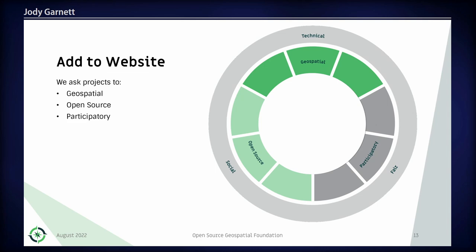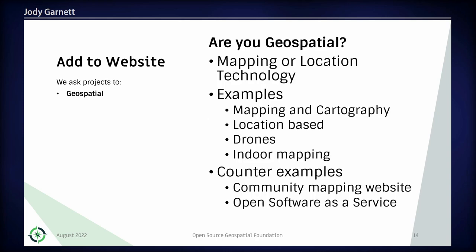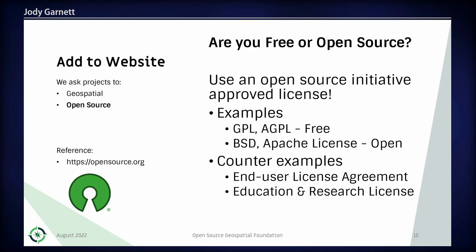To be added to our website, it's like an amusement park ride — we need you to meet a couple of requirements. The first is we ask you to be geospatial. The second is we ask you to be open source. And the last is we want you to be open to participation with others. That matches our values as a foundation. For open source, we ask that your license is one approved by the Open Source Initiative — things like GPL, AGPL, BSD, and so on.